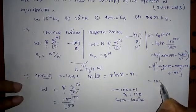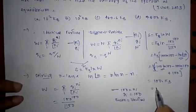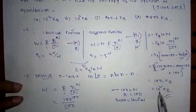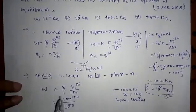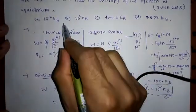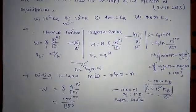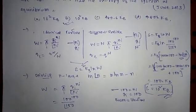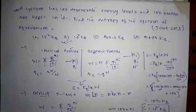The ln(100) terms cancel out, leaving only 100 times k_B, which equals 10 squared times k_B. This is the entropy at equilibrium. Therefore the correct answer is answer B. Thank you guys — if you have any doubt, write in the comment box below and please subscribe our channel for more videos from physical chemistry.